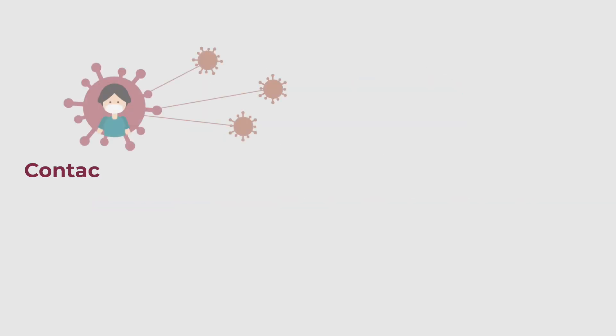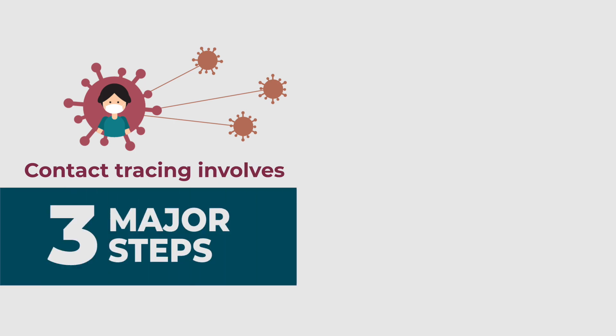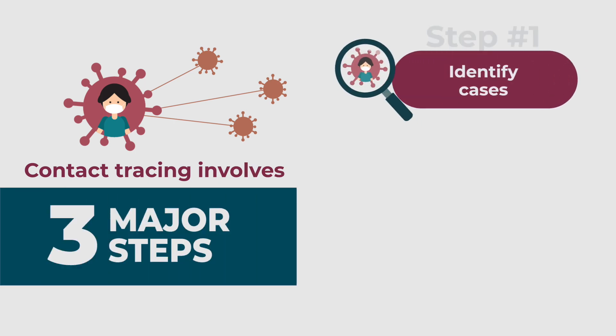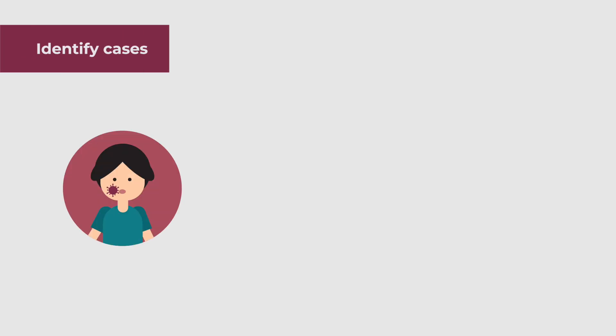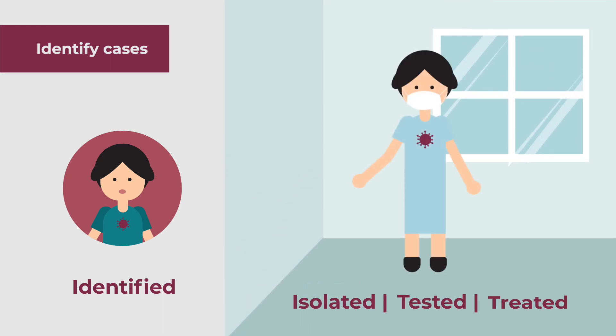Contact tracing involves three major steps. Step 1: Identify cases. Persons with COVID-19 or those who may have COVID-19 are identified. They are isolated, tested, and treated.